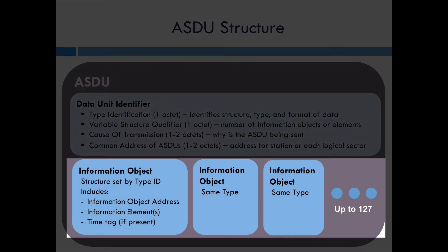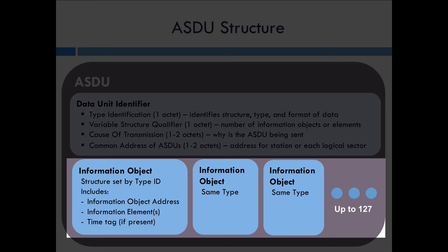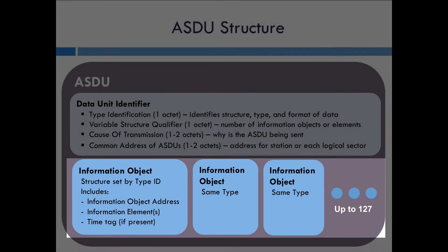Then there are the information objects, of which there can be multiple or just a single one. The structure of the information objects is based on the type identification. It will always include the information object address and always include at least one information element, and it can include a time tag. There are several different ways these can be put together, just like there are several different ways an ASDU can be put together.